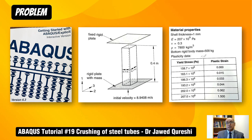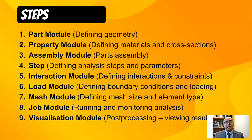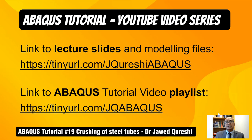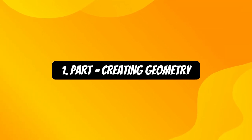I will carry out the analysis in two parts. First, we will carry out the buckling analysis to get 10 mode shapes, which we will use to perturb the mesh and include imperfections in the crushing analysis. I will be using SI units where length is in meters, force in Newtons, and mass in kg. These are the nine steps I will use to model this structure in Abaqus. A link to all modeling files and lecture slides can be found at tinyurl.com/jcoreshi-abaqus.